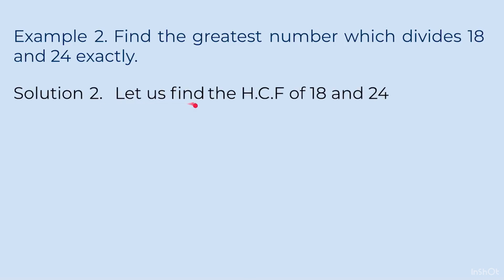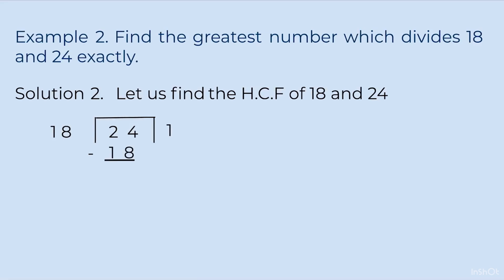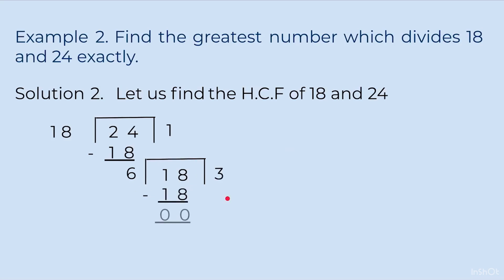Let us find the HCF of 18 and 24. We will do it by the division method. We write 24 inside and 18 on the outside of the division symbol. 18 goes one time, and when we subtract we get 6. Then we draw the division symbol again and bring 18 inside. We divide 18 by 6; it goes 3 times and we get 0 remainder.